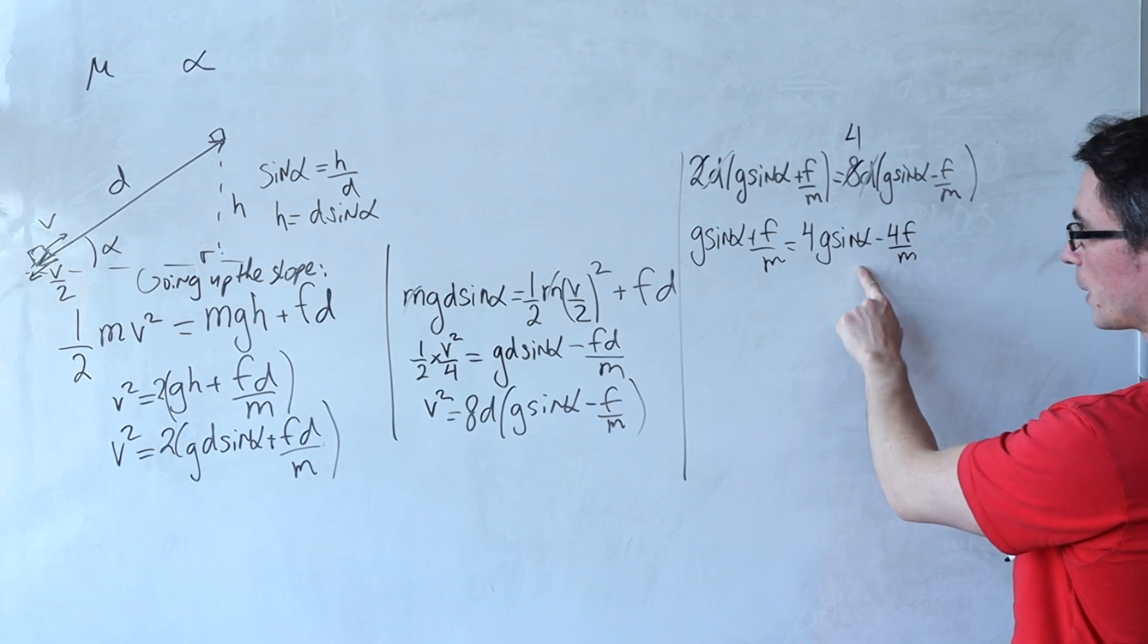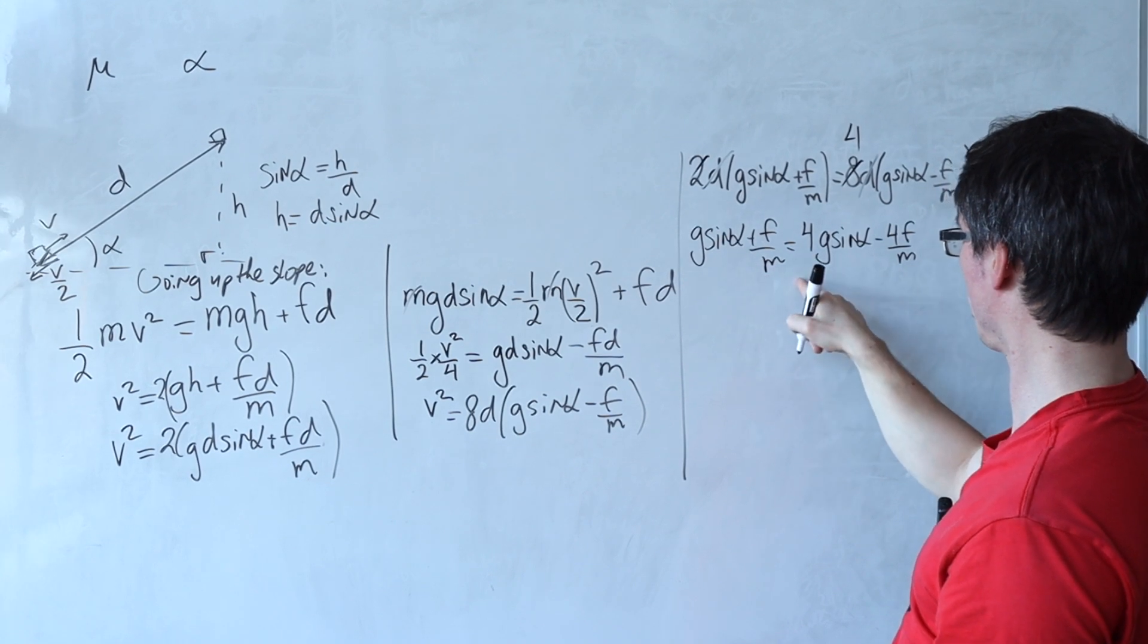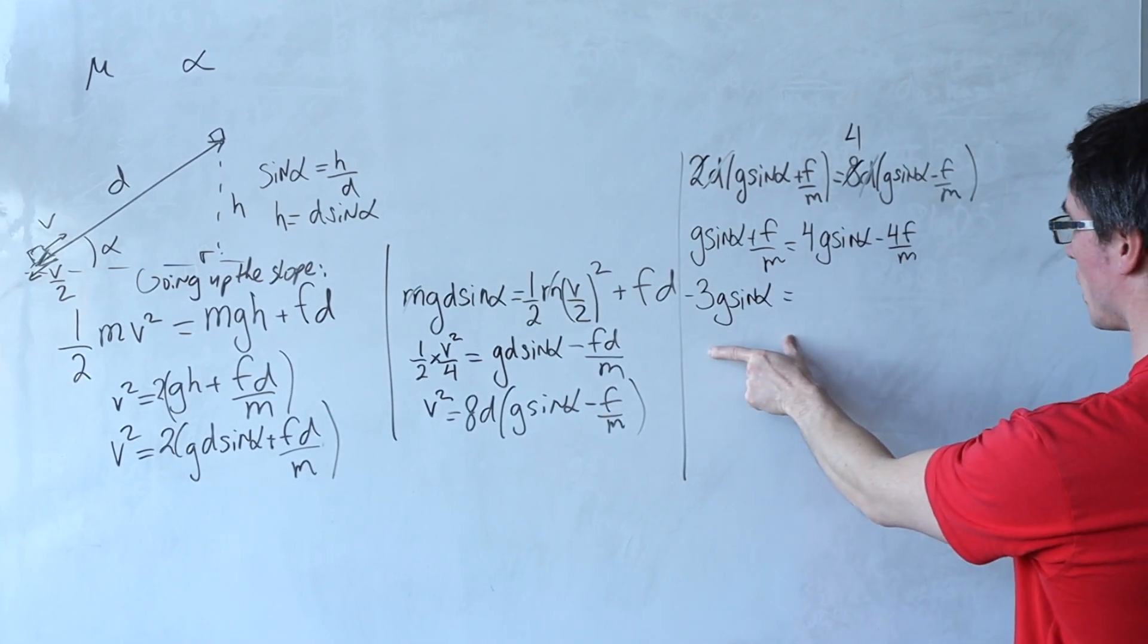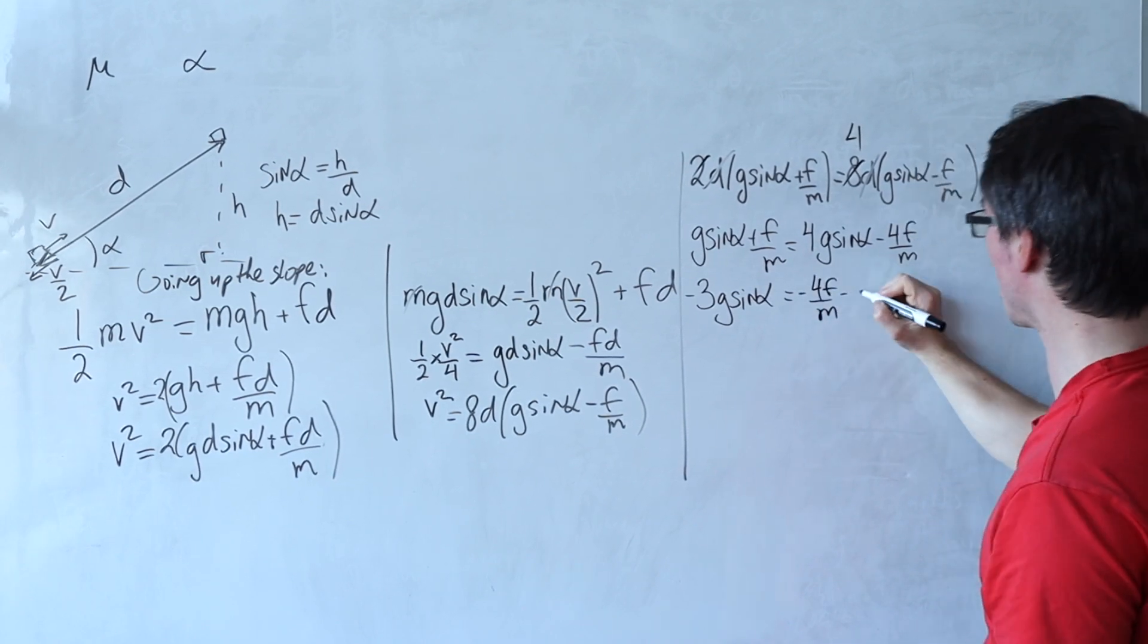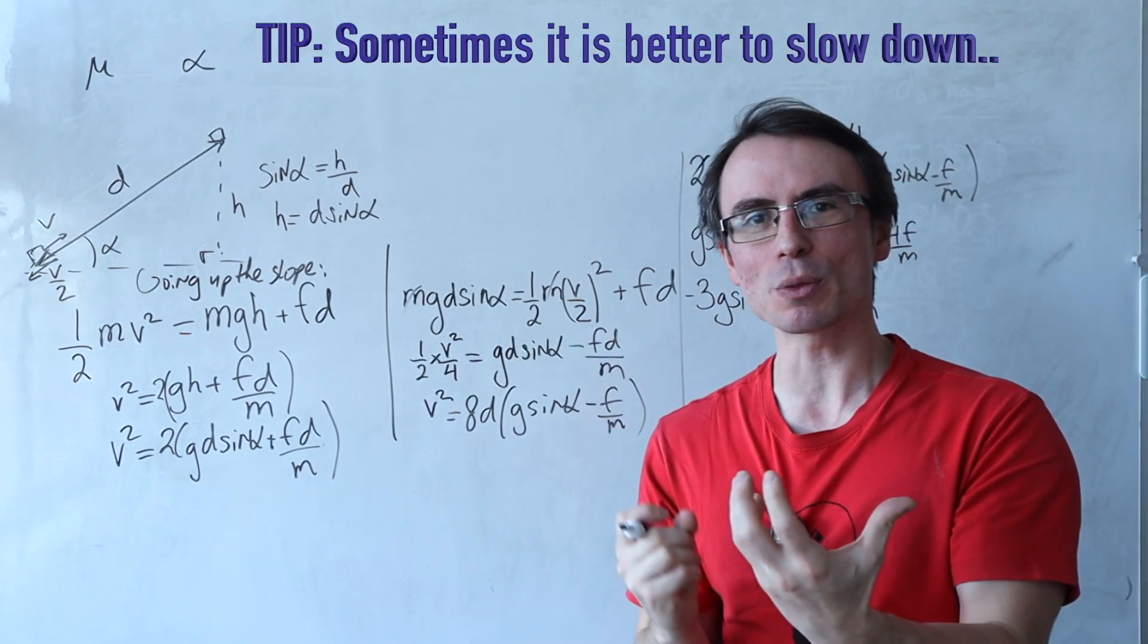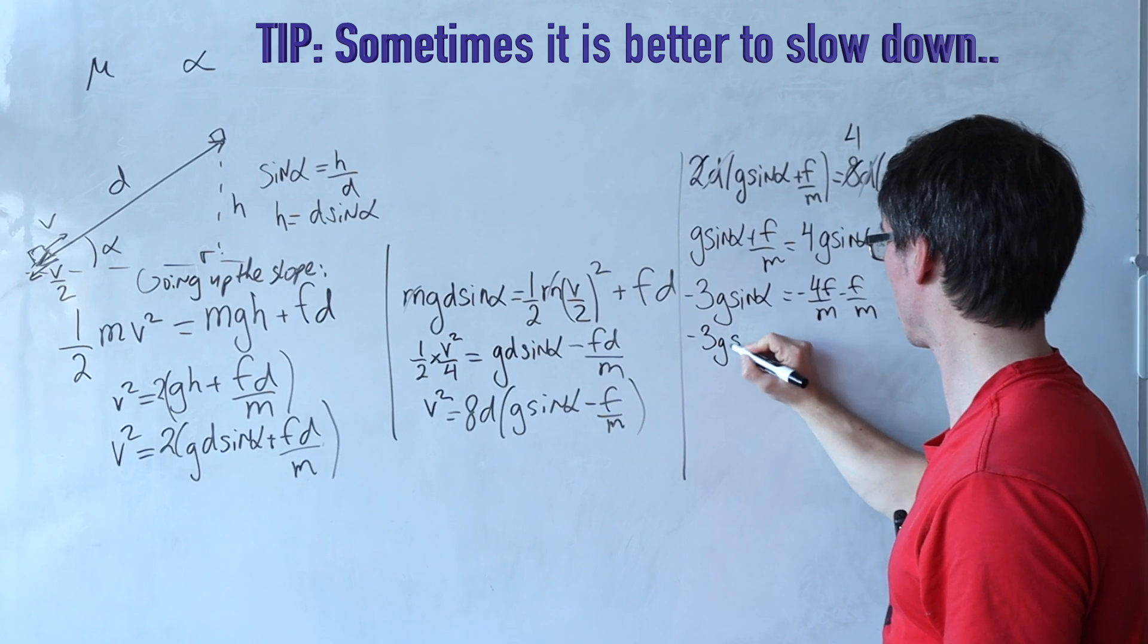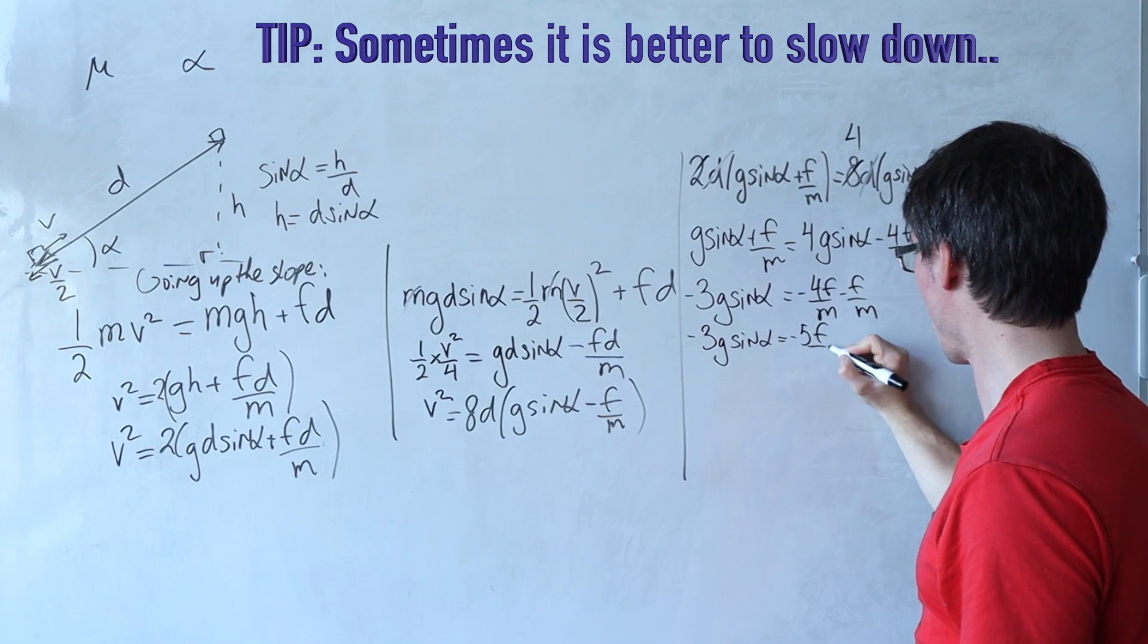Okay, now we can bring this to the other side and what are we going to get? We're going to get g sine alpha take away 4g sine alpha which is going to give me minus 3g sine of alpha which is going to be equal to minus 4f over m minus f over m. Towards the end of the problem, I try to be quite slow with the algebra just to avoid any silly mistakes. So minus 3g sine of alpha is equal to minus 5f over m.